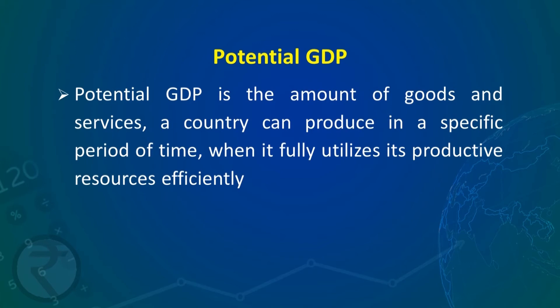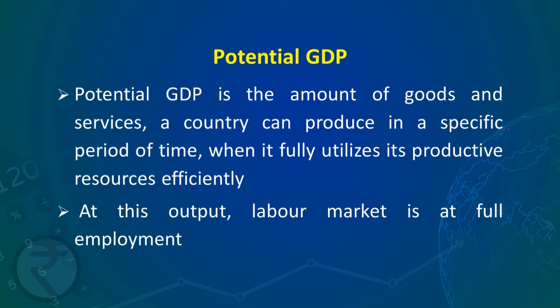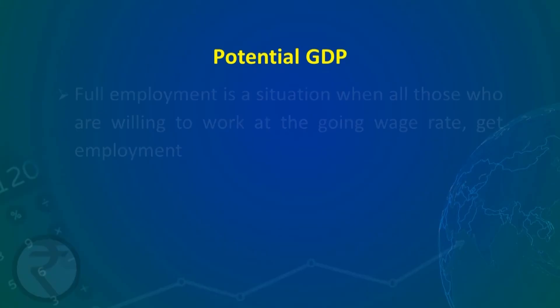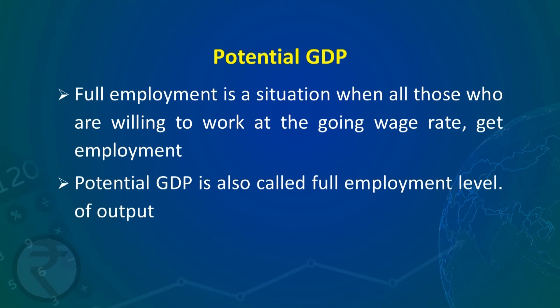Potential GDP is the amount of goods and services a country can produce in a specific period of time when it fully utilizes its productive resources efficiently. At this output, the labor market is at full employment. Potential GDP is the maximum output a country can achieve by making use of all types of available resources. Full employment is a situation when all those who are willing to work at the going wage rate have got employment. Potential GDP is also called the full employment level of output.